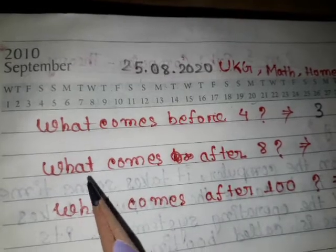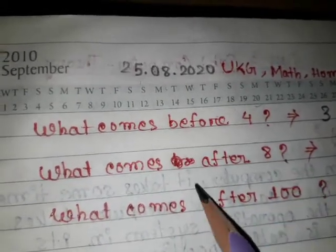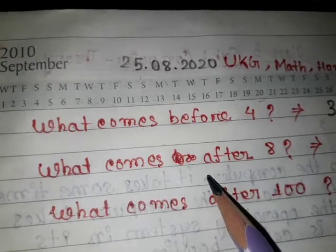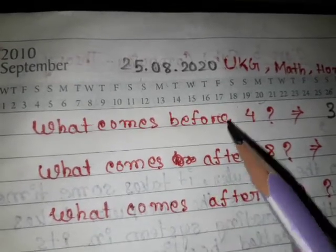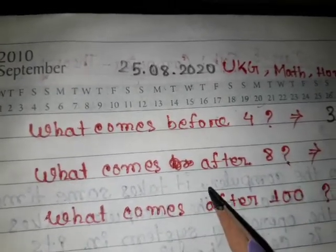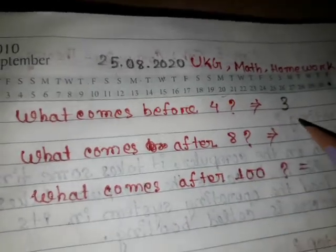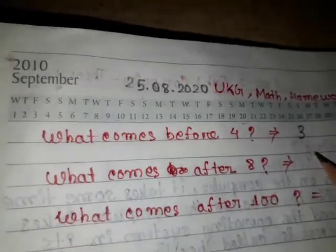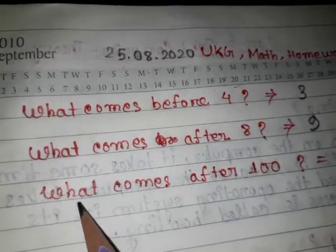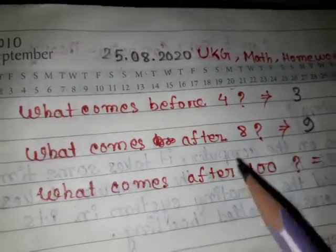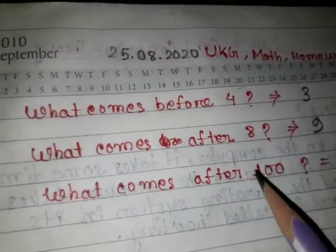The second question is: what comes after eight? We know after means what comes next. So after eight, we know eight then nine, so the answer is nine. And the last question is: what comes after one hundred?